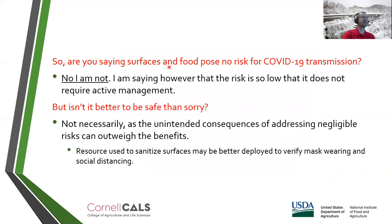This does not mean there is no surface transmission risk for COVID-19, but that risk is so low that it does not require active management. Many of you may say, isn't it better to be safe than sorry? Not necessarily, as unintended consequences can outweigh the benefits when we try to manage negligible risks. This also applies in the food industry — one example is using excessive resources to sanitize surfaces for an extremely low risk, taking away resources that may be better deployed, for example, to verify mask-wearing and social distancing.